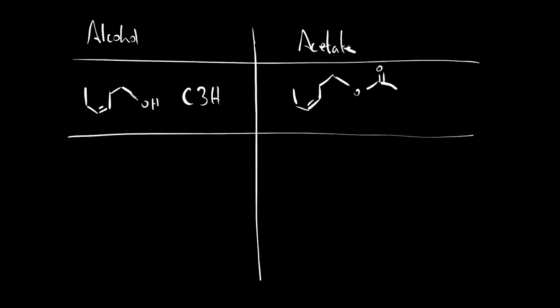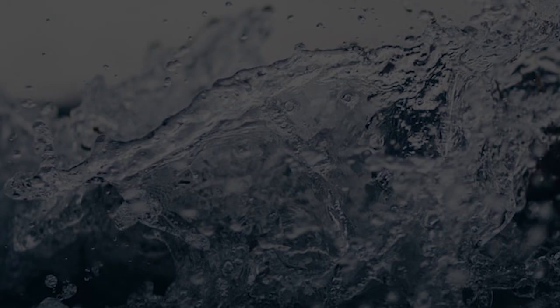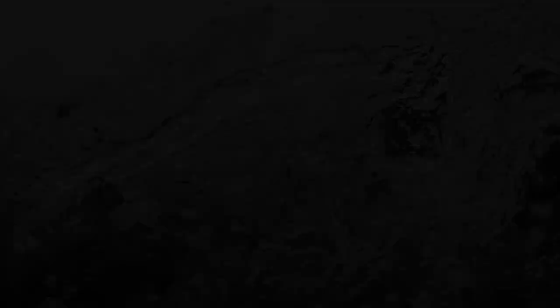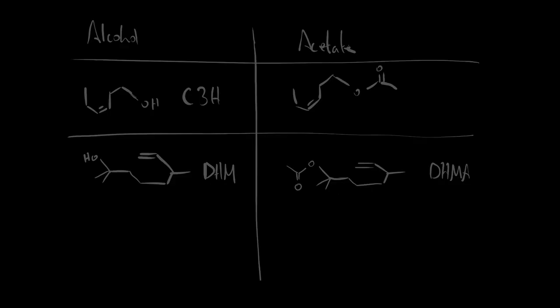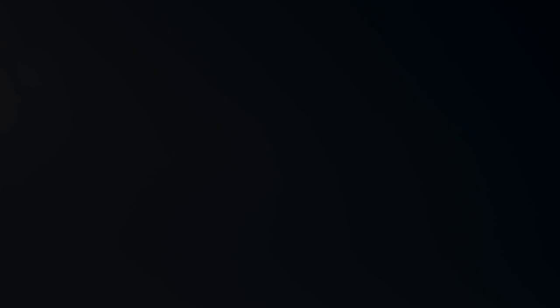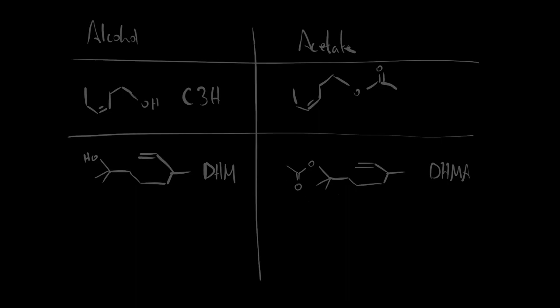So the next example I'm going to show you is dihydromersenol. So this is that characteristic kind of 90s men's aftershave fresh watery scent. Once you smell it you'll definitely recognize it. But again we can make this one into an acetate. And the dihydromersenol acetate again does still have some element of the watery freshness though I think it's a lot more dulled this time. But it has this very characteristic now acetate kind of smell.